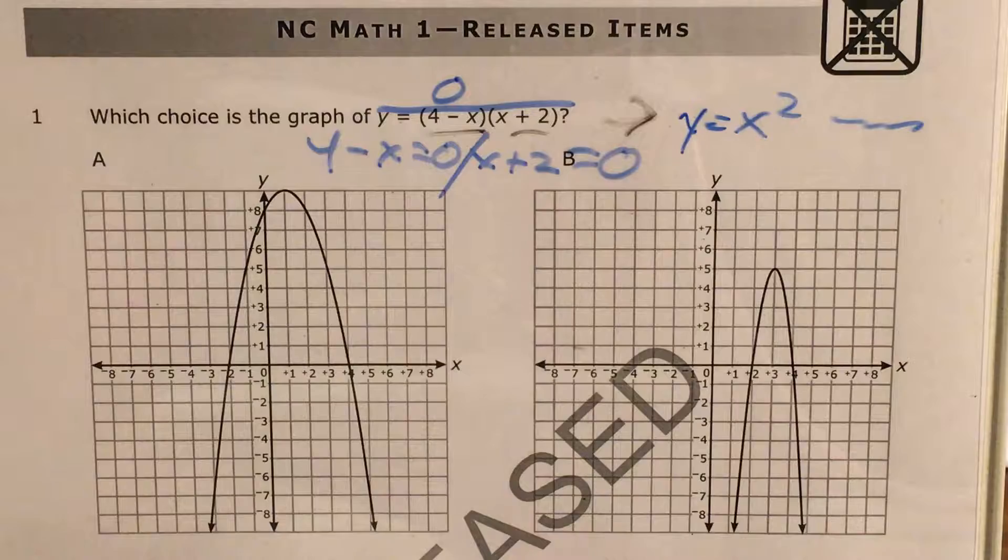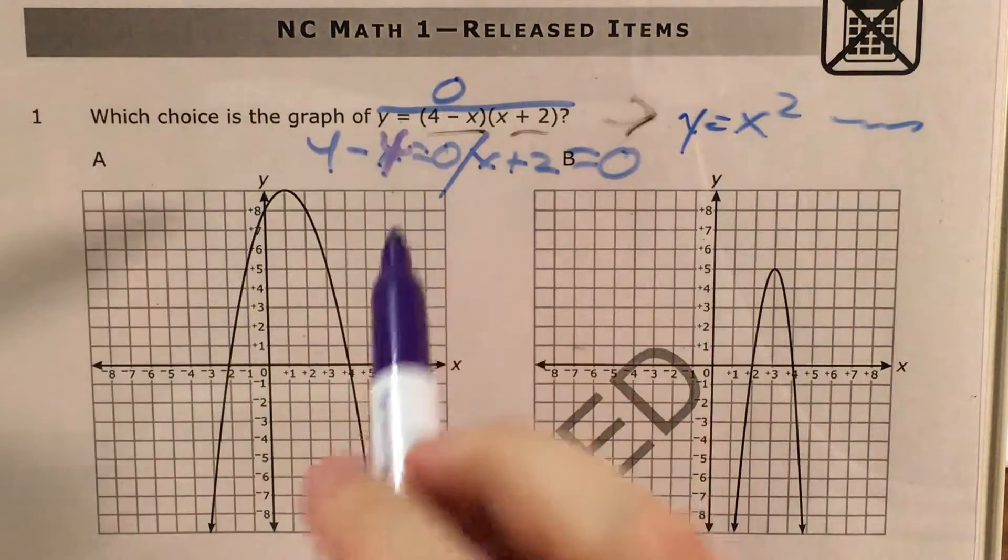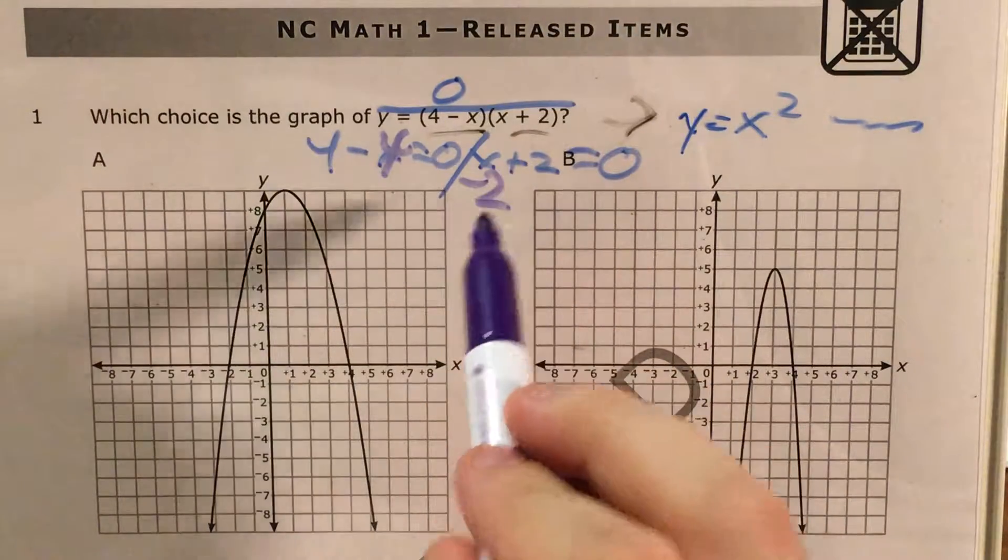This little bit of arithmetic is relatively simple compared to everything else in this question. 4 minus what number equals 0? Well, that's just going to be 4. And what number plus 2 equals 0? That will be negative 2.